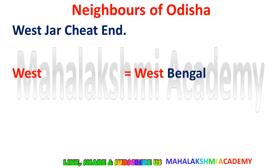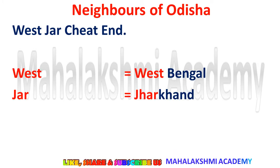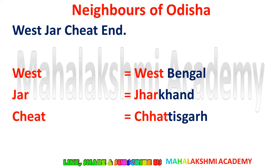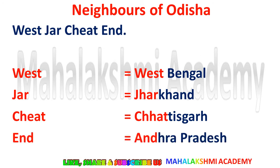Here is how the trick works: West is for West Bengal, Jaar is for Jharkhand, Cheat is for Chhattisgarh, and End is for Andhra Pradesh. These are the neighbors of Odisha.